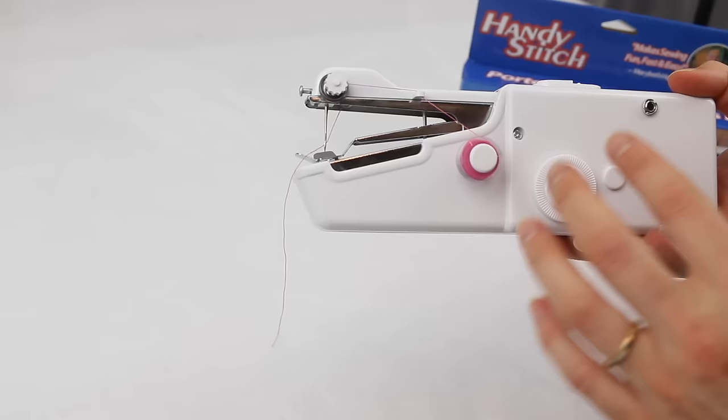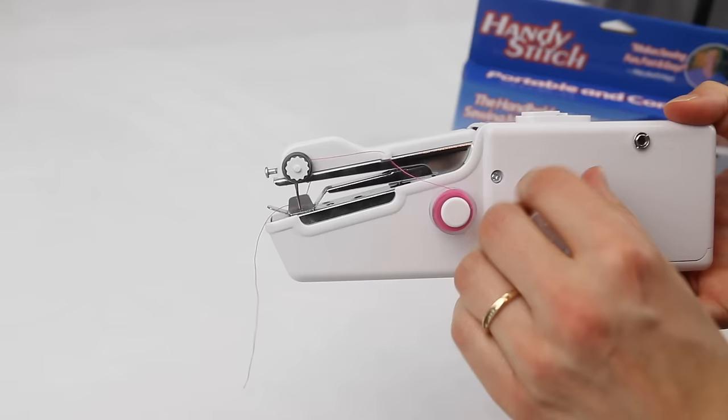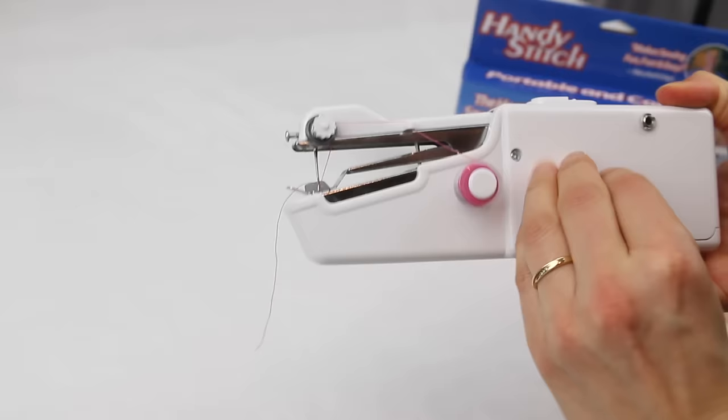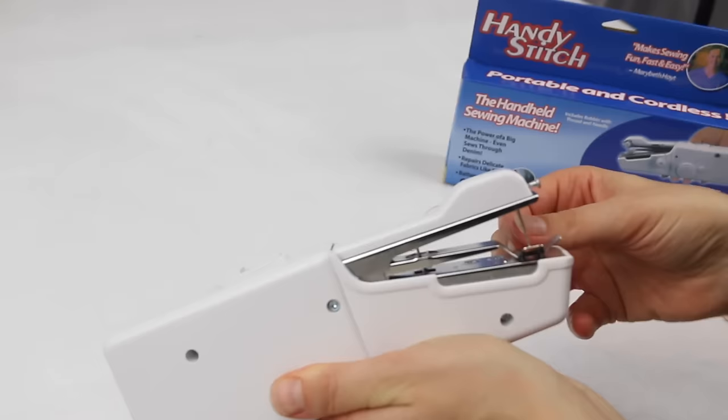Before we do that I'm just going to show a couple of other parts. Here we have the rotary wheel. This allows you to take the needle up and down. It doesn't matter which direction you use it in, either way works. And we also have this bit here, this is the fastening plate. We're going to show you how to use that in a minute. All right, we're ready to sew.